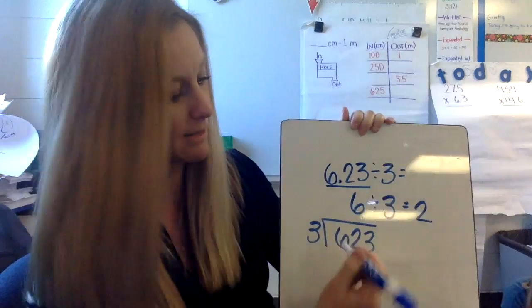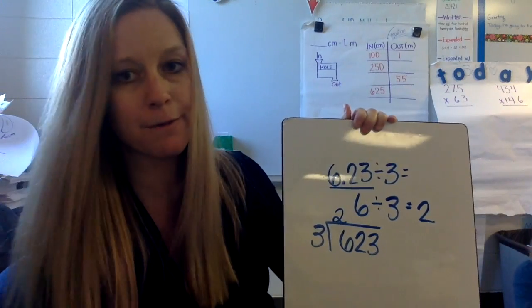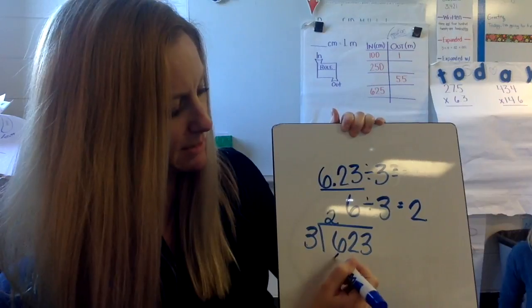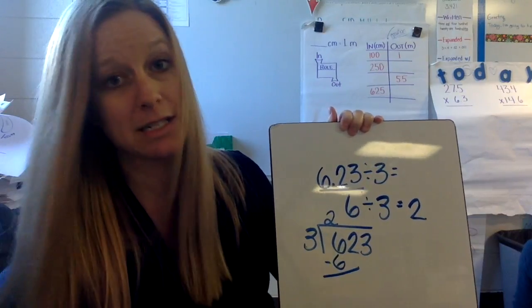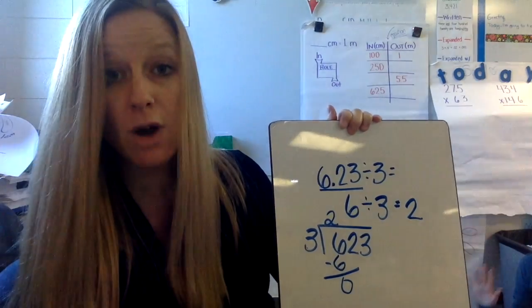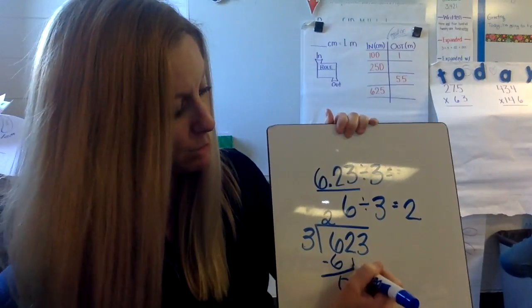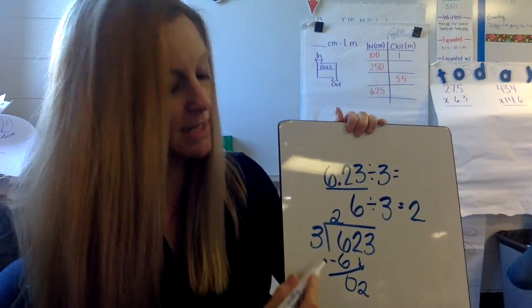That goes in twice, so I put my 2 above and I say 2 times 3 is 6. I find the difference: 0. I drop down my next number which is a 2.